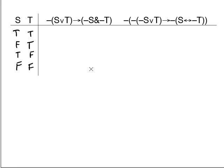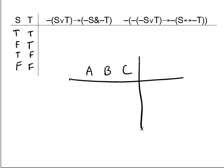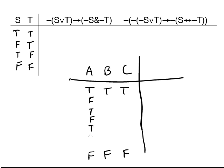This is probably not a bad point at which to ask: if you had three different sentence letters, how many rows would you have to list and how do you do it? It's going to be eight rows. You'll have the case where they're all true and the case where they're all false. The easy way to generate these is to alternate by ones in the first column: true, false, true, false, true, false, true, false.